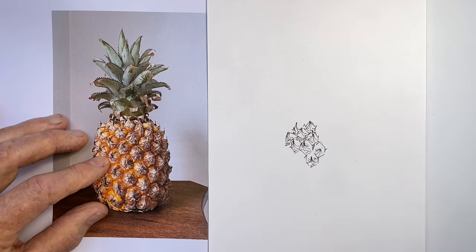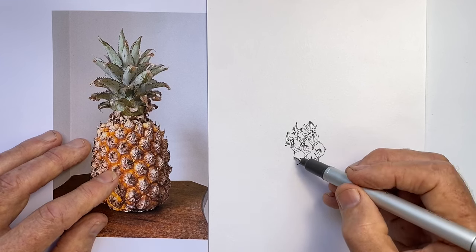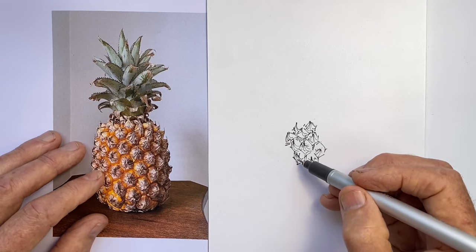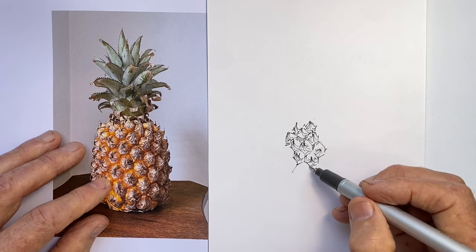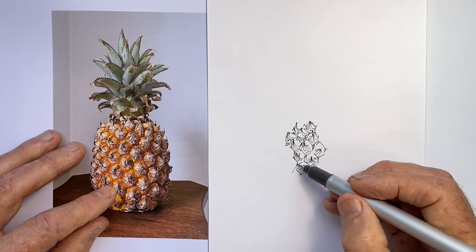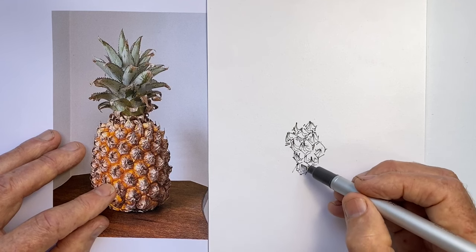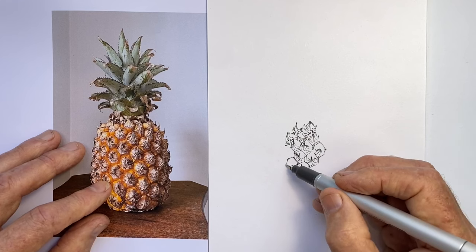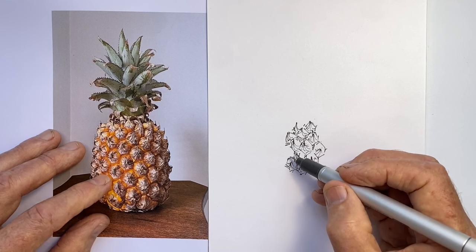But we also have to allow for the fact that the growth that comes off each of them, that the position of that growth changes as they move around as well. The ones we look straight at, the center point of that growth is more or less in the centre. But as the hexagonal shapes move around left and right, where that growth comes together moves to the left or to the right of the shape.